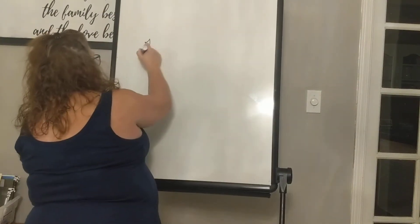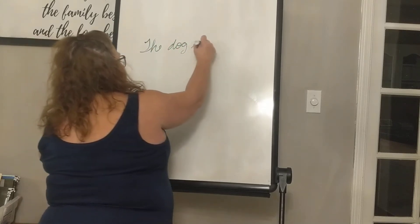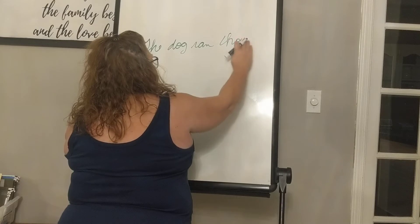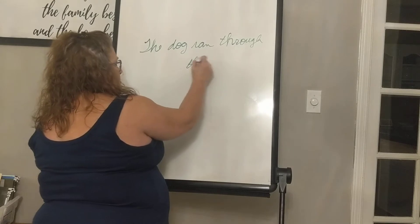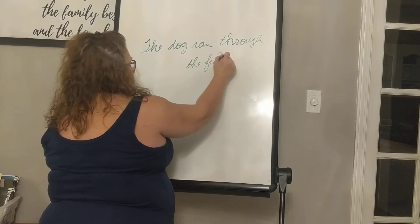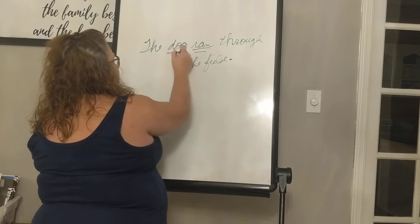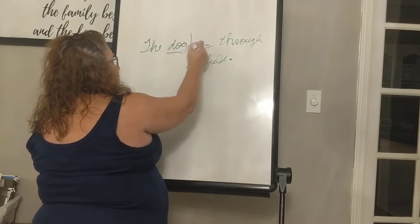Every sentence has two parts: the subject part of the sentence, which contains the subject, and the predicate part of the sentence, which contains the verb. We talked about how when we divide between the subject and predicate, we will always put our vertical line right before the verb. If our sentence was 'The dog ran through the field,' our verb is 'ran.' Who or what ran? Dog. Our vertical line will always go in front of the verb.